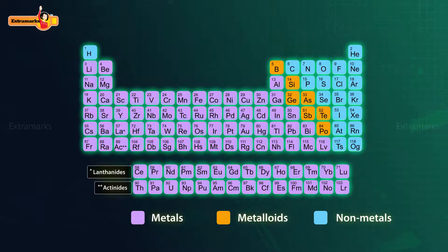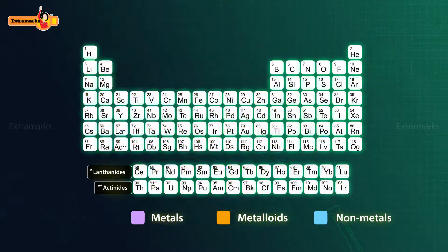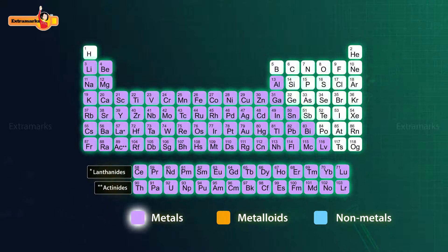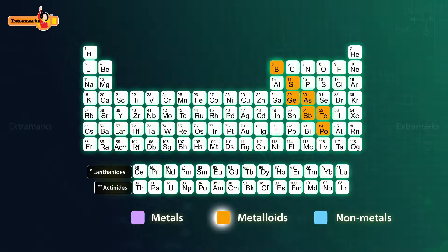Now, let's take a look at the arrangement of metals, non-metals, and metalloids in the periodic table. The left and middle of the periodic table is occupied by the metals. On the right of the table are the non-metals, except for hydrogen, which lies on the left. In between the metals and non-metals are the metalloids, which have properties intermediate between those of metals and non-metals.